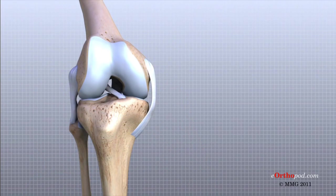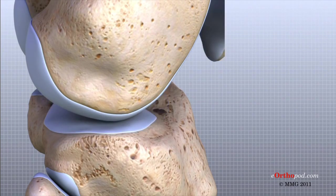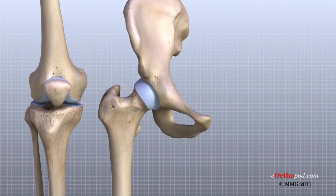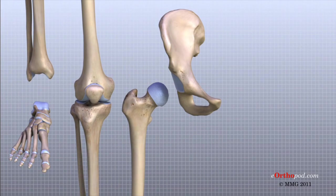Taken all together, the ligaments of the knee are the most important structures that stabilize the joint. Remember, ligaments connect bones to bones. Without strong, tight ligaments to connect the femur to the tibia, the knee joint would be too loose. Unlike other joints in the body, the knee joint lacks a stable bony configuration. The hip joint, for example, is a ball that sits inside a deep socket. The ankle joint has a shape similar to a mortise and tenon, a way of joining wood used by craftsmen for centuries.